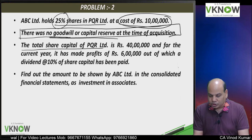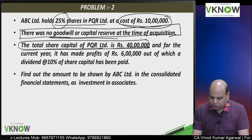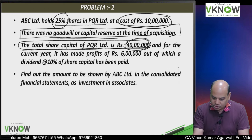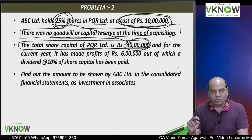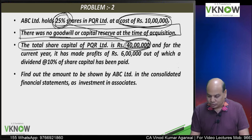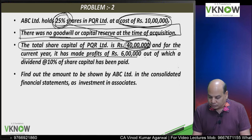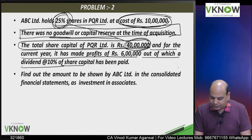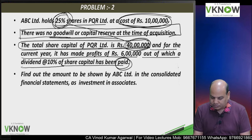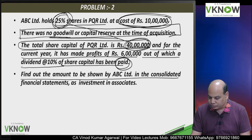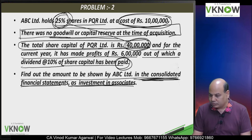The total share capital of PQR is Rs. 40 lakh. If you take 40 lakh into 25 percent, it will come to 10 lakh only. And if you compare cost with net asset 10 lakh, goodwill is 0. For the current year, it has made a profit of 6 lakh, out of which dividend at 10 percent of the share capital has been paid. Find out the amount to be shown in the Consolidated Financial Statement as an investment in associate.